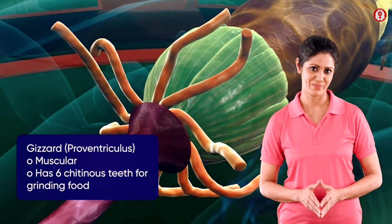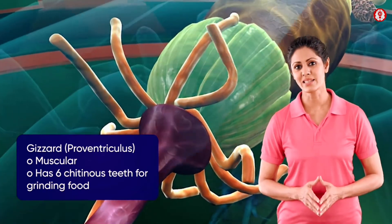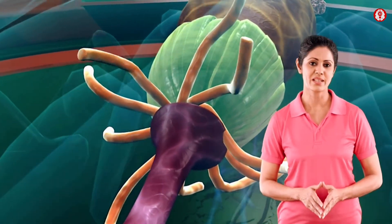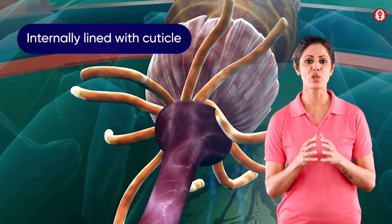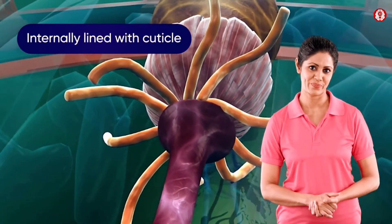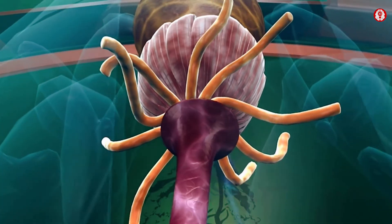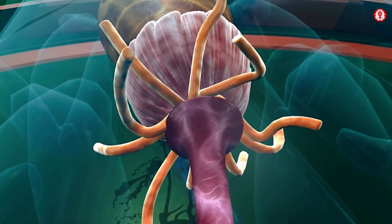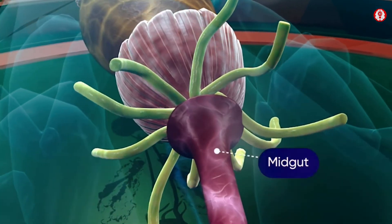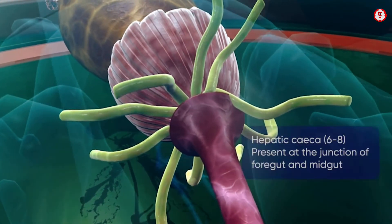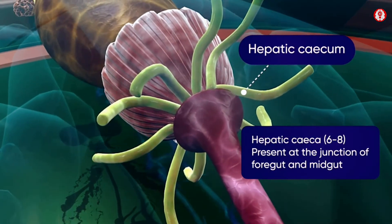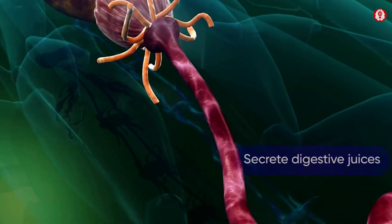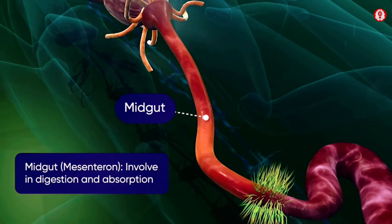Six chitinous teeth are found within the gizzard, which is entirely lined with cuticles internally. At the junction of the gizzard and midgut, there are six to eight tubular hepatic caeca which secrete digestive juices. The midgut, or mesenteron, is a narrow tube of uniform diameter.